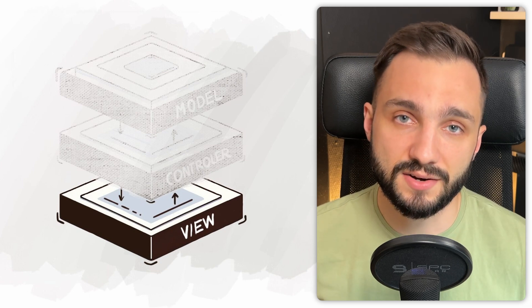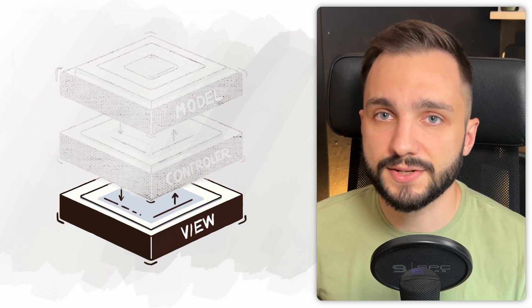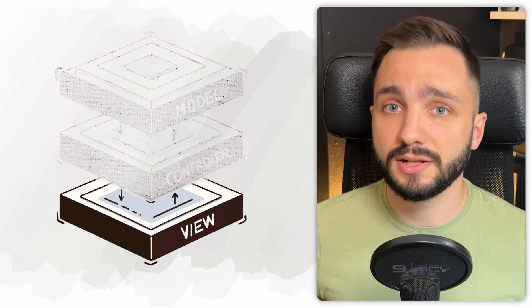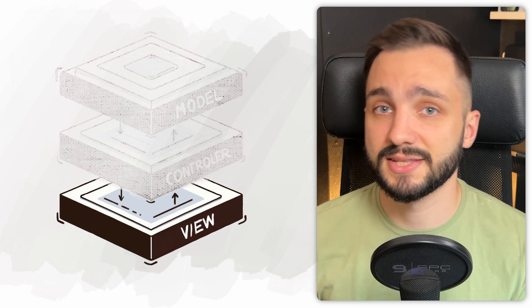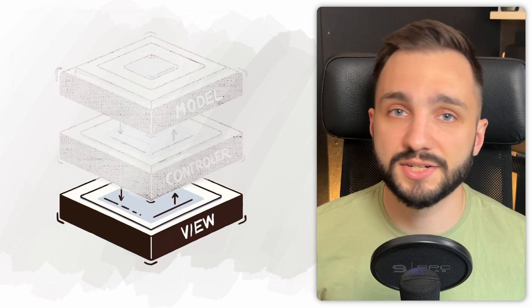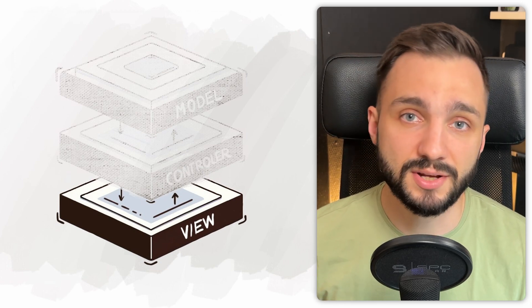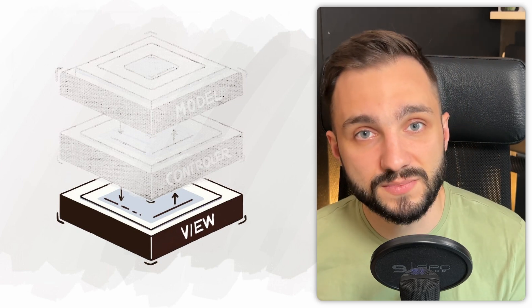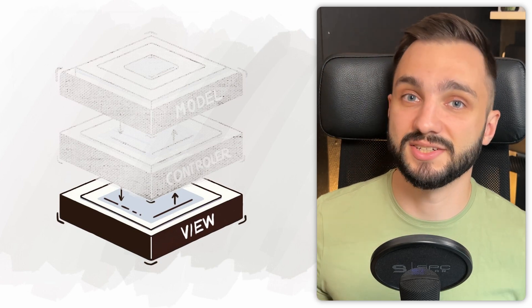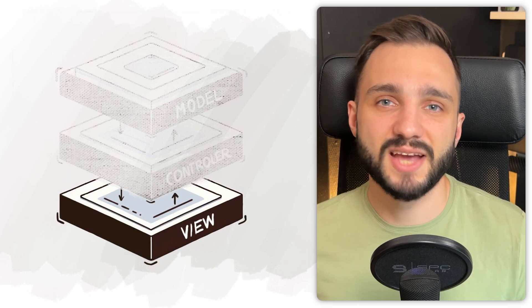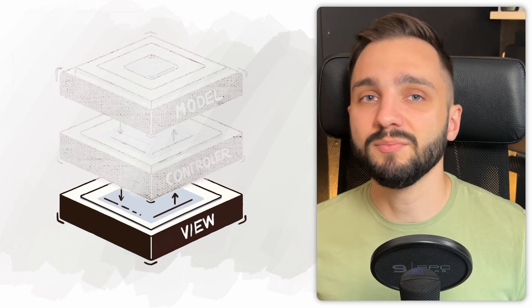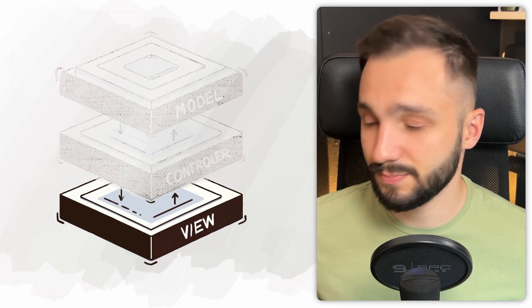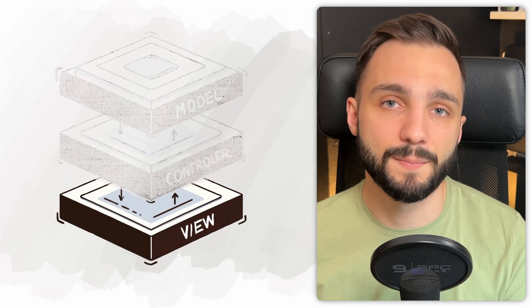The next one is the view layer. It represents the application interface and takes care of presenting data in a user-friendly form — so it defines how the application looks, for example with HTML or CSS, and what interactions the user can perform, for example with HTML and JavaScript. It communicates directly with the user, takes input and passes it to the controller to run specific actions defined in the model.